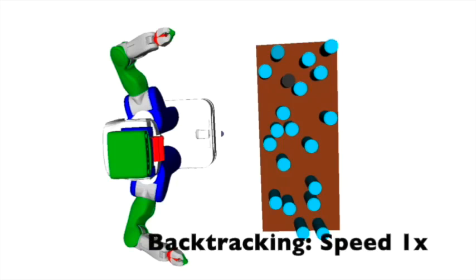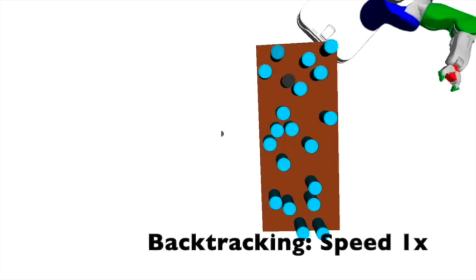For the can world, we first show a contrived example that illustrates why discretization of the sample space for picking up the black can fails.